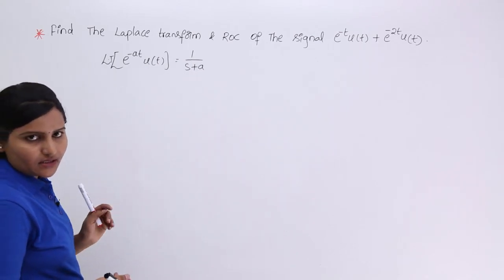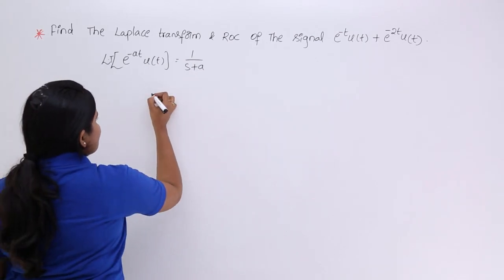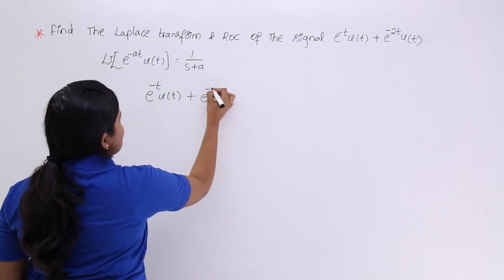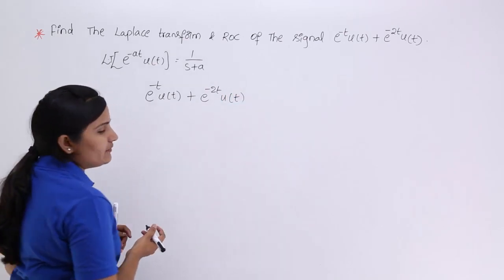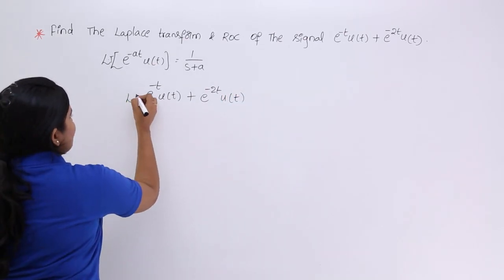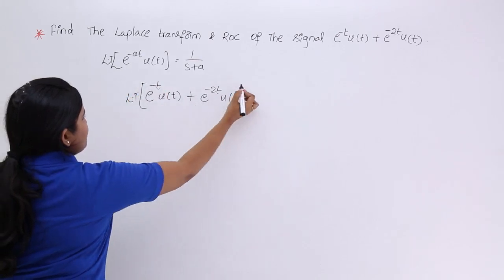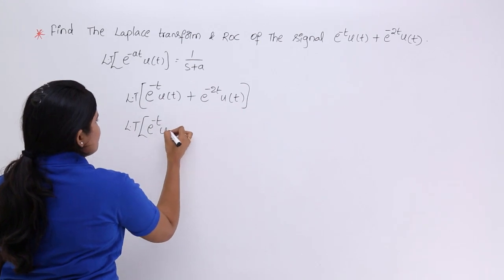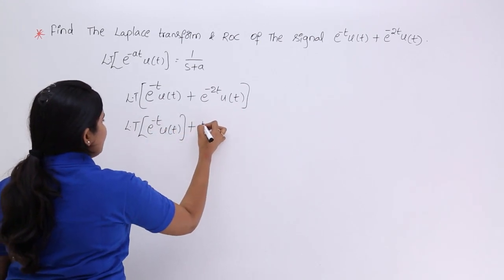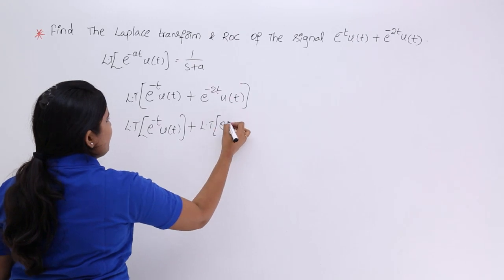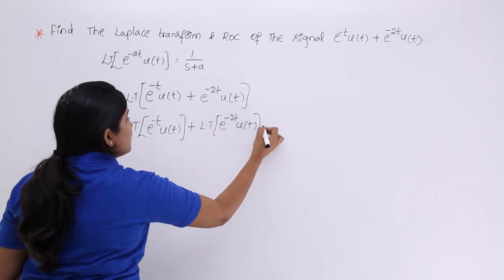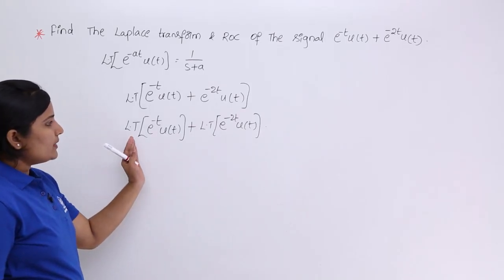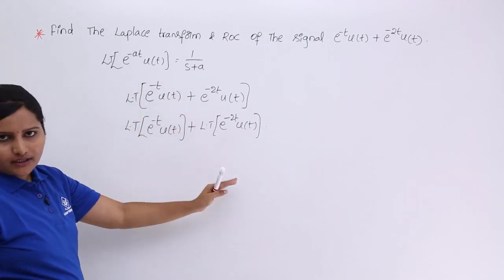Considering the given signal e power minus t u of t plus e power minus 2t u of t, if you are asked to find the Laplace transform, you can take the Laplace transform of individual signals. That means the Laplace transform of e power minus t u of t plus the Laplace transform of e power minus 2t u of t, because Laplace transform obeys the linearity property.